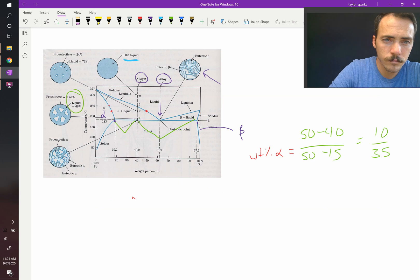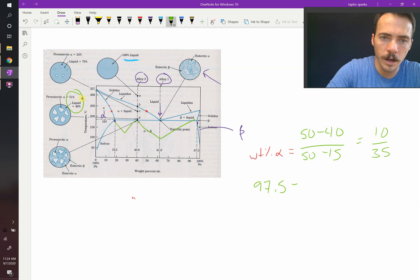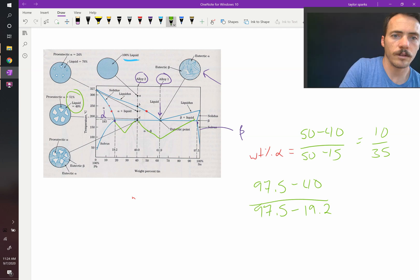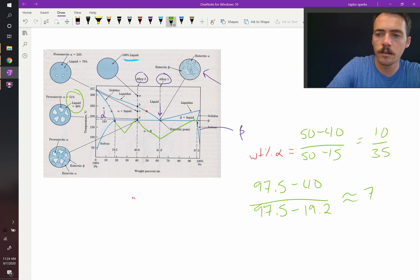It's going to be 97.5 minus 40 over 97.5 minus 19.2. Let's punch that into our calculator really quick. 73.4 percent. So just below that point, just below the eutectic, about 73 percent of our solid is going to be alpha phase.